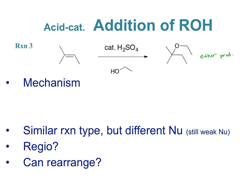Let's talk about the mechanism for the alcohol addition. First, the nucleophile — the double bond — is going to attack the H+ since it's acid catalyzed. We get the carbocation with the positive charge on the more substituted carbon, because that's the best carbocation we can have. Once we get the carbocation, the nucleophile can attack. That new bond comes from the alcohol — it's the nucleophile that attacks the carbon with the carbocation.